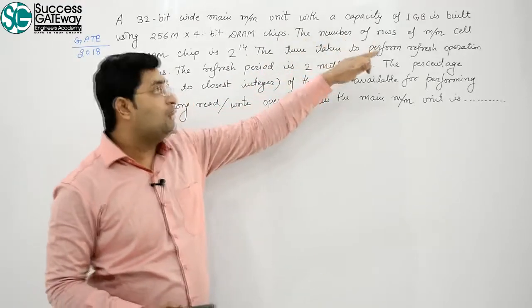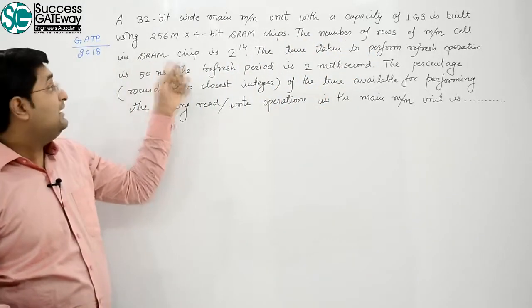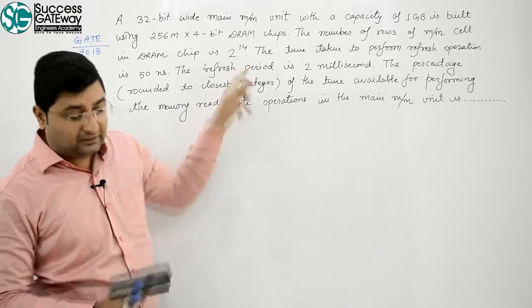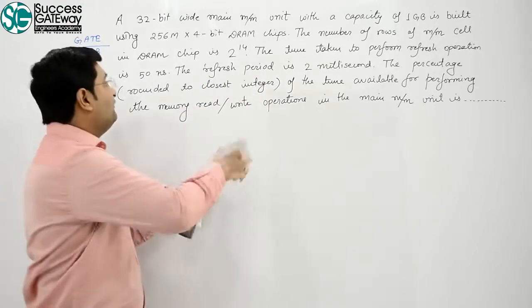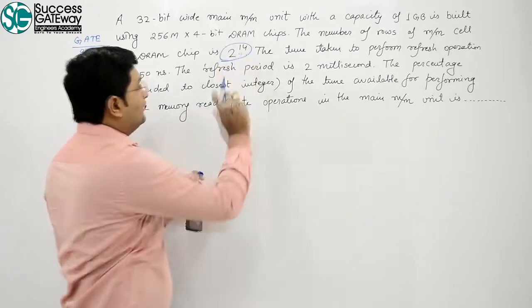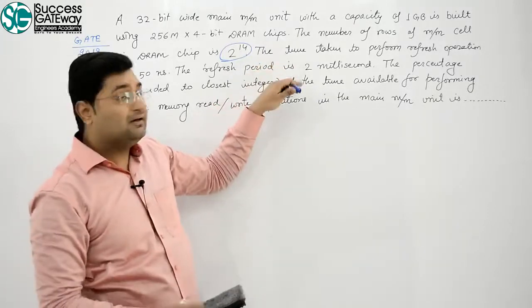The number of rows of memory cell in DRAM chip is 2 ki power 14. Hum ko number of rows ki need hoti hai, therefore hum loghi se circle kar deete.